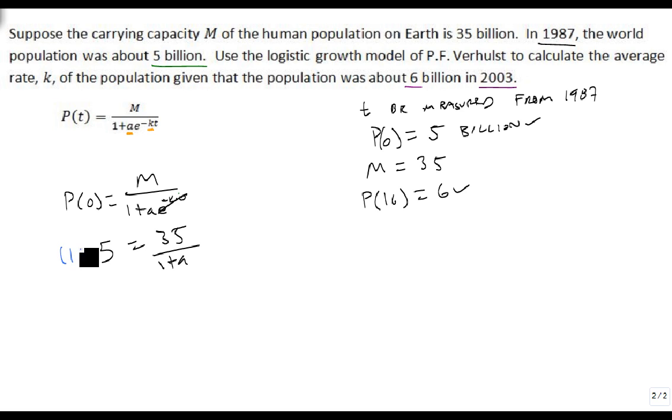So, if we multiply both sides by 1 plus A, and also, let's divide by 5, because 5 goes into 35, we get 1 plus A equals 7, so A is 6.